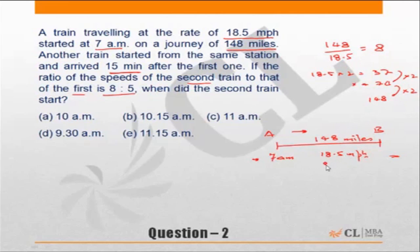At 18.5 miles per hour, it is taking 8 hours to reach the destination. It started at 7 AM, 7 plus 8 is 15, so it will reach at 3 PM. Another train started from the same station and arrived 15 minutes after the first one.